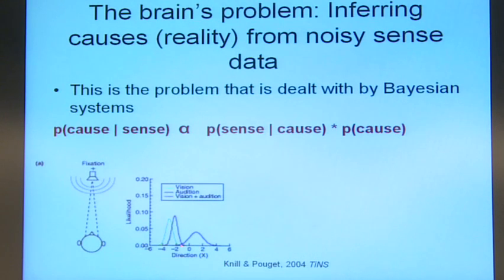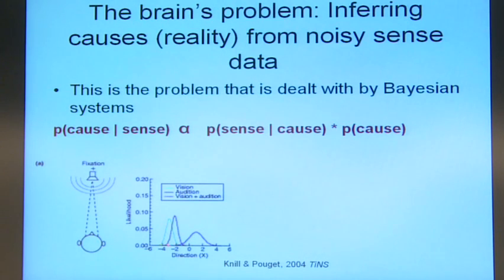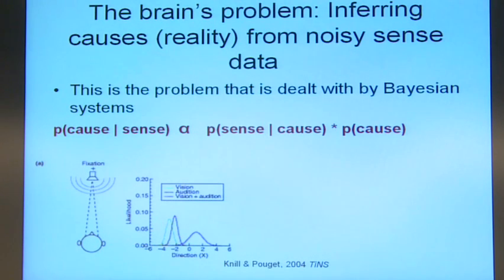Say this was the vision in green. This is the probability distribution centred on this point here, so it's at minus 3 degrees. And it has a very tight distribution because visual data is less noisy.